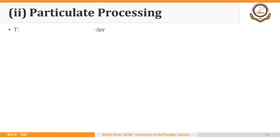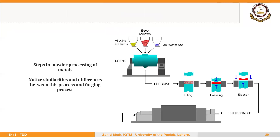Then we have powder metallurgy or particulate processing. Here the starting material is powder. Different powders are generally mixed together, and some lubricants are also mixed. That powder is then pressed between two components of the tooling — the upper is a punch and the lower is a die. Depending upon the shape of punch and die, we get the required shape, and the finished part is then sintered to improve the mechanical properties. We won't be discussing the design of dies for powder metallurgy, but some features are similar to forging dies or stamping dies.